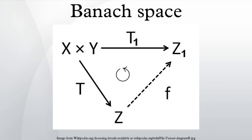Its importance comes from the Banach–Alaoglu theorem. Let X be a normed vector space. Then the closed unit ball B* = {x* ∈ X* : ‖x*‖ ≤ 1} of the dual space is compact in the weak* topology. The Banach–Alaoglu theorem depends on Tychonoff's theorem about infinite products of compact spaces. When X is separable, the unit ball B* of the dual is a metrizable compact in the weak* topology.